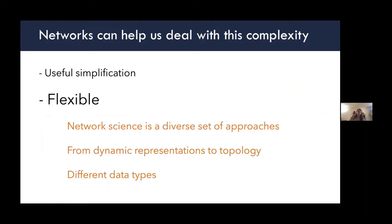Network approaches are also really flexible. Network science is a diverse field with different approaches from really dynamic representations of connected systems to simpler ones that just use topology, like the presence or absence of an edge. It's also flexible for integrating different types of data, where we might have really detailed quantitative descriptions of species interaction strengths, or only qualitative expert opinion on what components of a system are connected. Networks provide a uniform set of approaches to deal with varying degrees of complexity and data types.